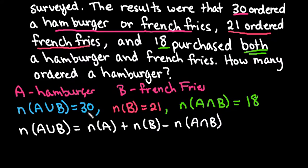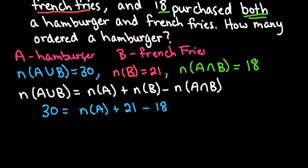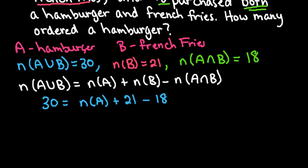So now all we have to do is plug in these numbers. So we would replace this with 30. The number in A, we don't know. That's what we're trying to find. The number in B is 21. And the number in both is 18. So with this, you could solve for A first.